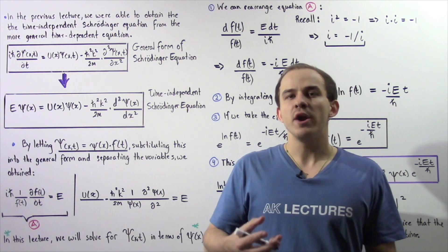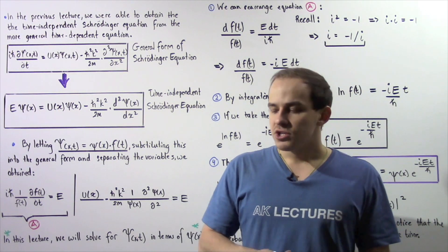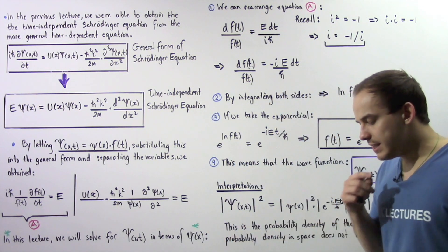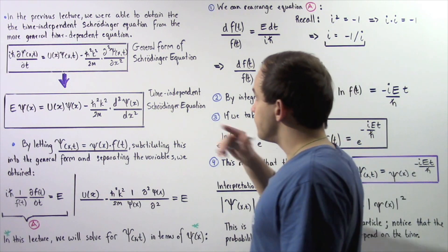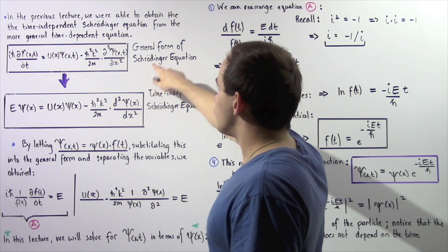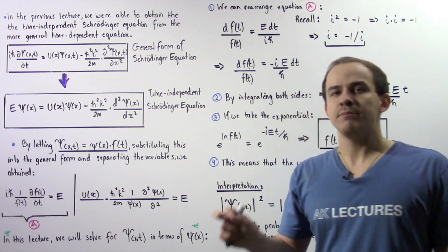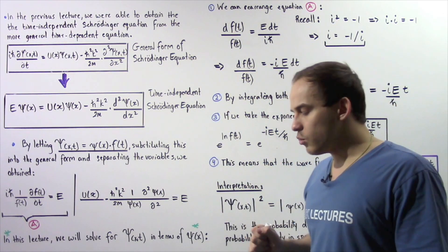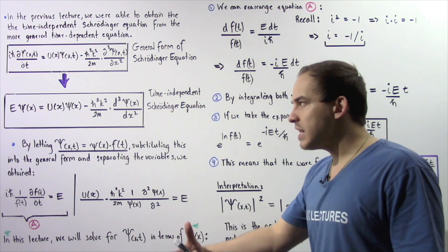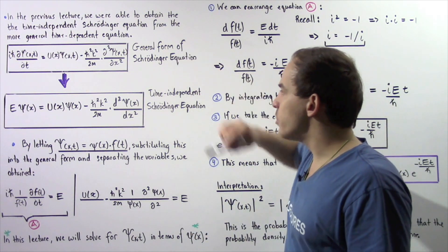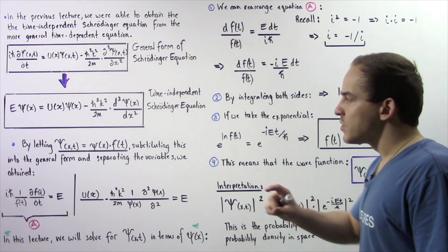In this lecture, we're going to begin from where we left off in the previous lecture. So let's review what we did previously. We basically took the general form of the Schrödinger equation, also known as the time-dependent Schrödinger equation, followed a few steps, and ended up with the time-independent Schrödinger equation.